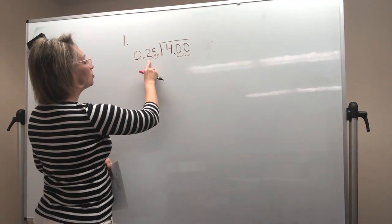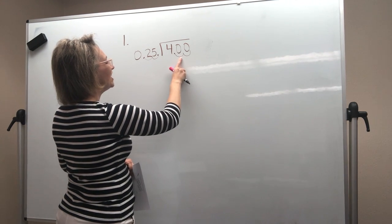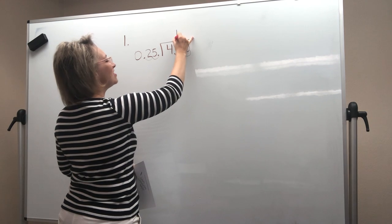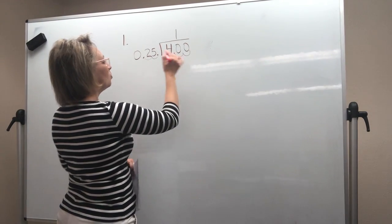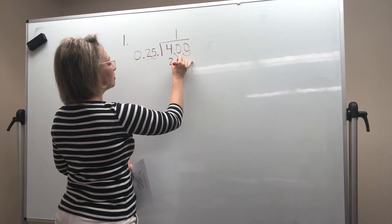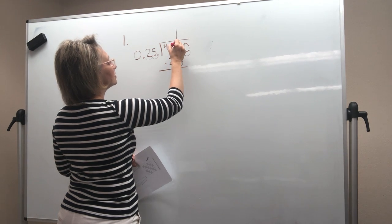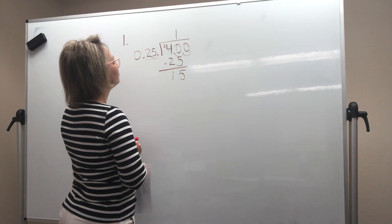Now I can go ahead and divide. 25, will it go into 4? No. Will 25 go into 40? It will. 25 goes into 40 one time. I know I can't do it two times because 2 times 25 is 50. So 1 times 25 is 25. I'm going to subtract. That's a 3. That makes that a 10. So I have 15.